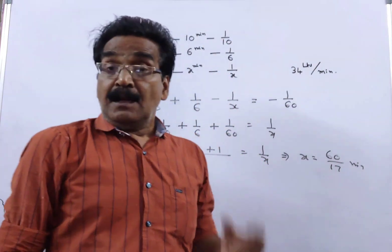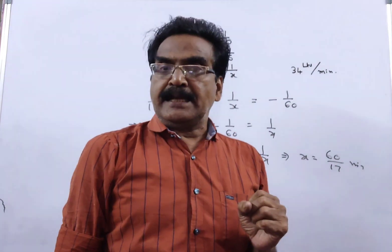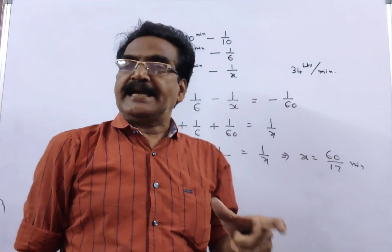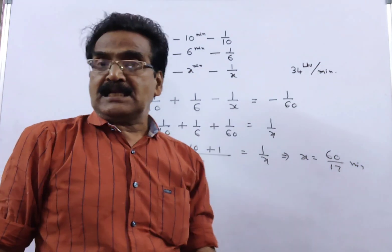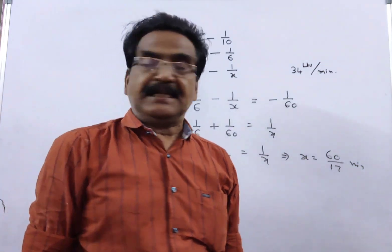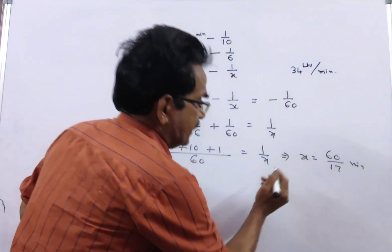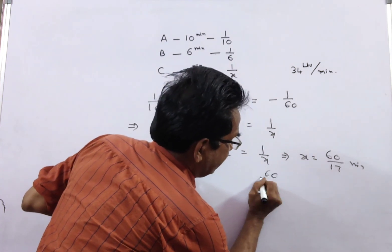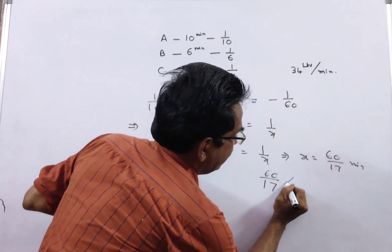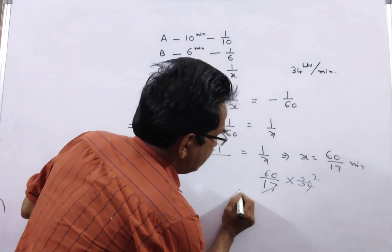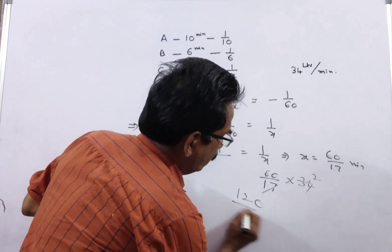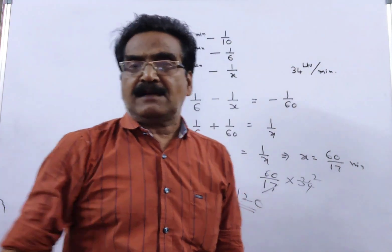Friends, pipe C can empty a full tank in 60 by 17 minutes and it draws 34 liters per minute. So, the capacity of the tank is 60 by 17 into 34. 17, 2's, 62's, 120 liters is the capacity of the tank.